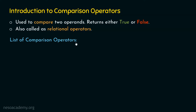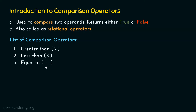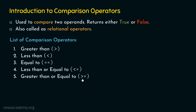Let's see the list of comparison operators in Python. The first operator is greater than, denoted by the > symbol. The second is less than, denoted by <. The third is equal to, denoted by double equal signs ==. The fourth is less than or equal to (<=). The fifth is greater than or equal to (>=). The last comparison operator is not equal to, denoted by != (exclamation mark followed by equal sign).